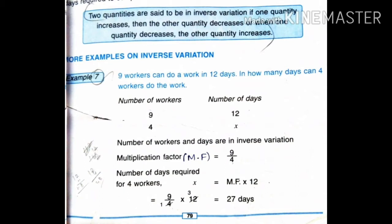That is the direct variation method. For inverse variation: when one quantity increases, the other quantity decreases, and when one quantity decreases, the other quantity increases. That is the inverse variation method. Today we will look at examples on page number 79.